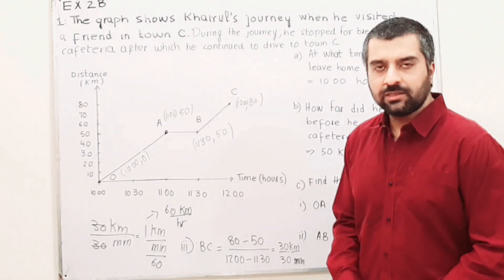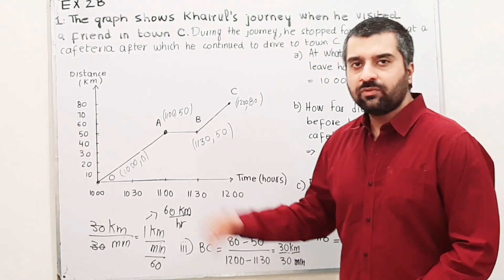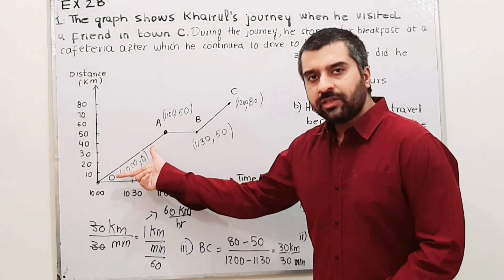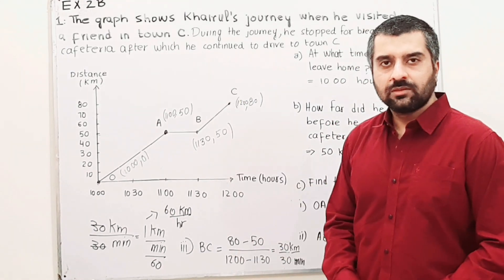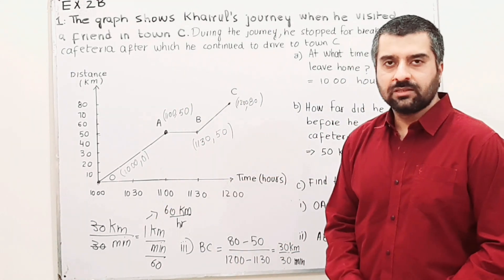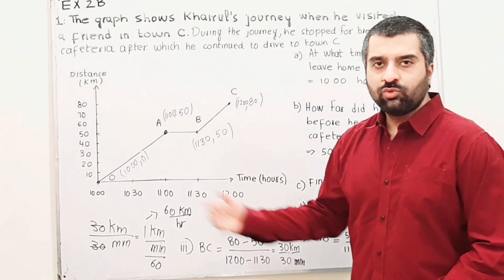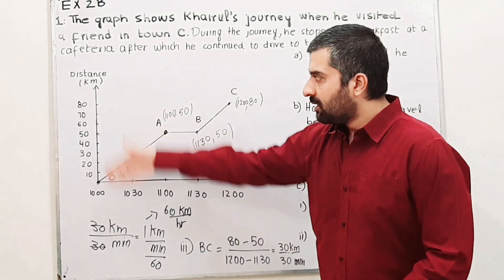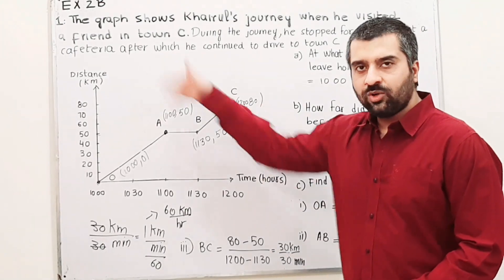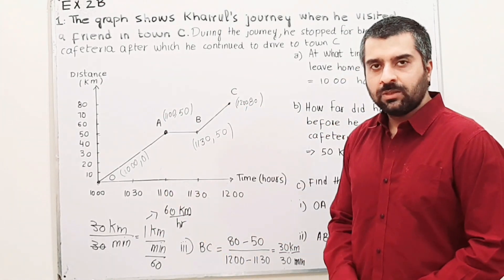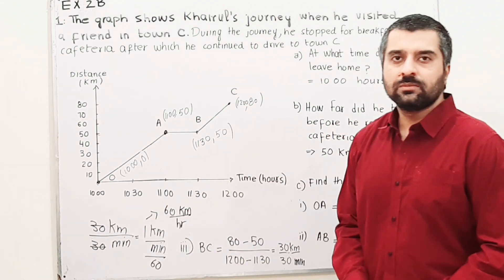We will be finding the gradient. How to find the speed? You will find the gradient of this section and you will get the speed. Because gradient is y over x, change in y divided by change in x. Here we have distance on y and time on x. So y over x means distance over time, which means speed.